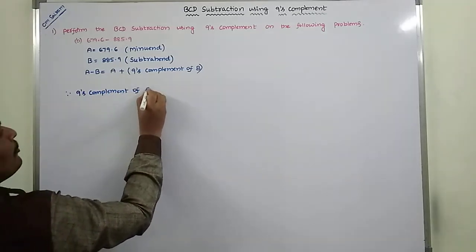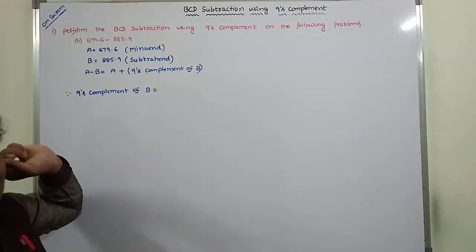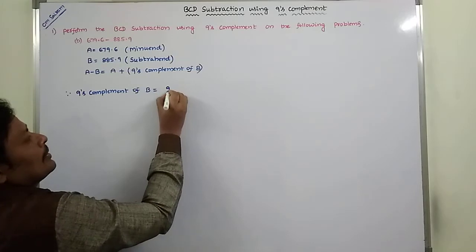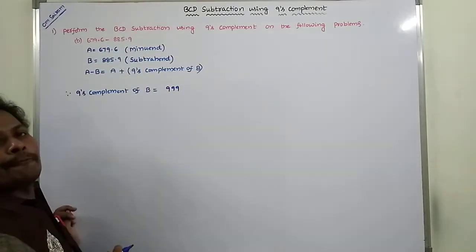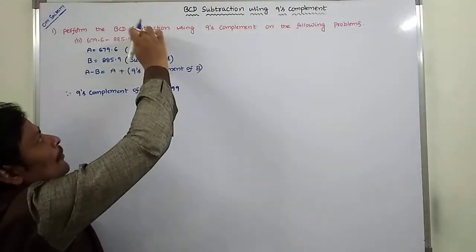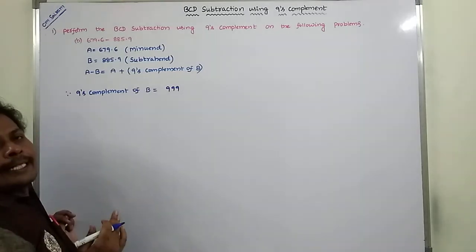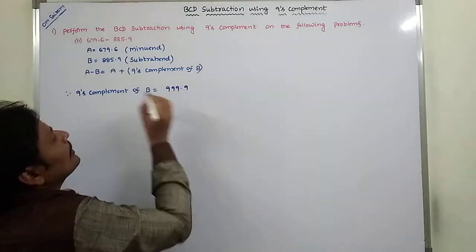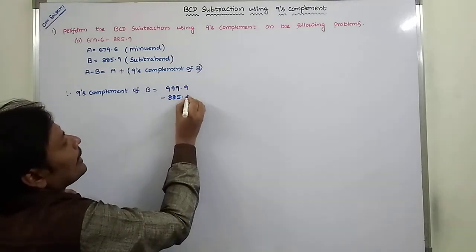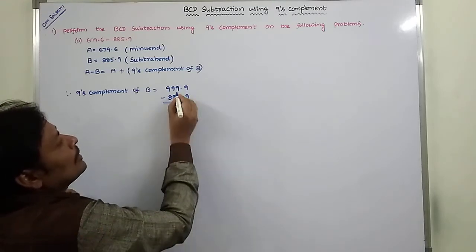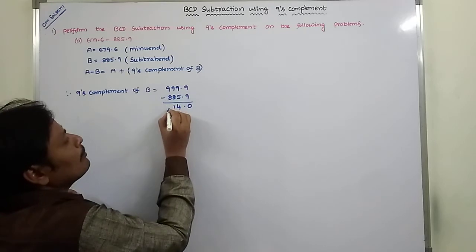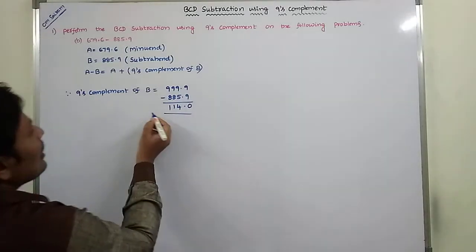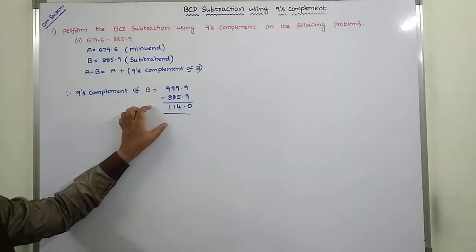The nice complement of B is obtained by subtracting each digit in 885.9 from 9. In the suprahan, there are 3 digits before the decimal point and 1 digit after, so 4 digits total. Subtracting from 9.9.9.9: 9 minus 9 is 0, 9 minus 5 is 4, 9 minus 8 is 1, 9 minus 8 is 1. So the nice complement of B is 114.0.